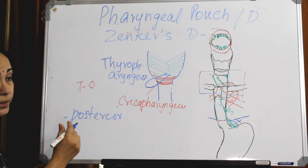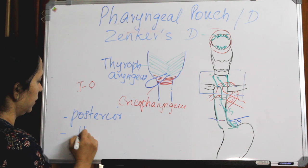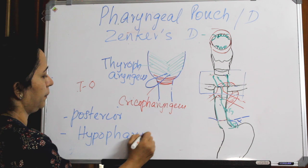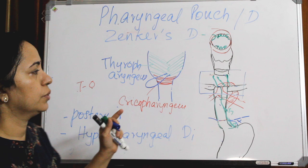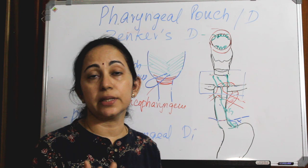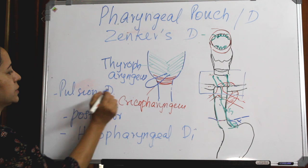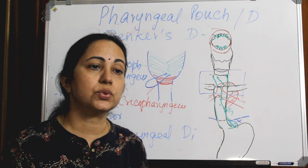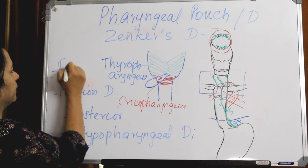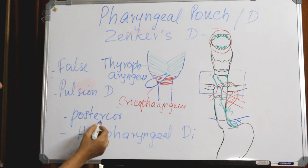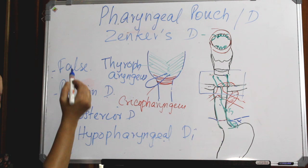It is happening in the hypopharyngeal region, so it is called a hypopharyngeal diverticulum. All these are synonyms: pharyngeal pouch, hypopharyngeal pouch, hypopharyngeal diverticulum. Because of increased intraluminal pressure, it is called a pulsion diverticulum. Since it does not involve all the layers of the esophagus, it is a false diverticulum, not a true diverticulum.